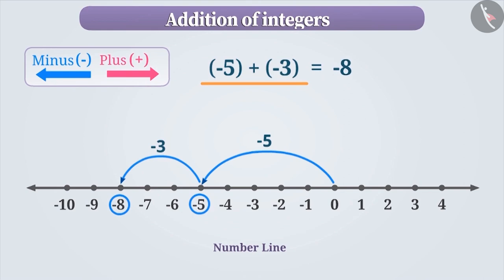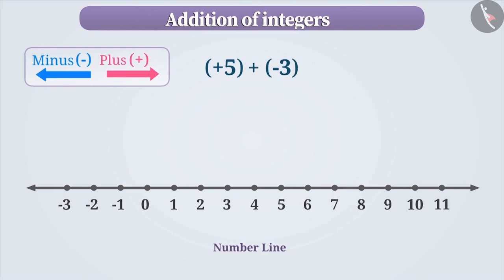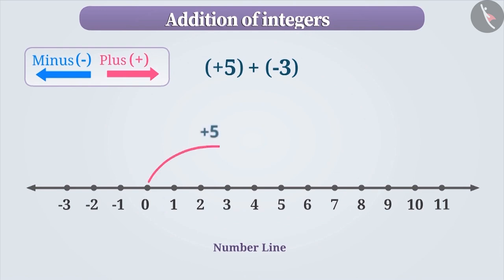Now suppose we have to find the value of plus 5 plus minus 3 on the number line. You got it right. To mark plus 5 first, we move 5 steps towards the right of 0. Now to add minus 3 to it, we move 3 steps towards the left of the first integer, resulting in plus 2.